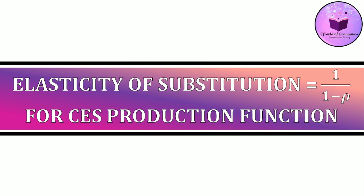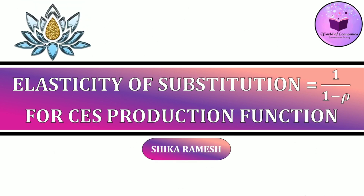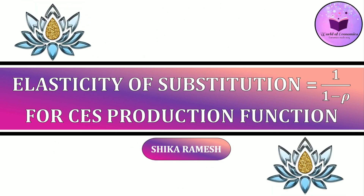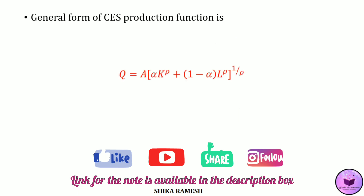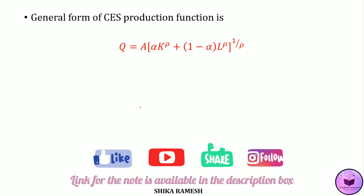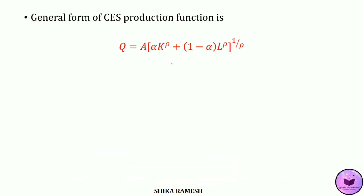Hello friends, in today's video we shall see the mathematical derivation of the elasticity of substitution for a CES production function, which is 1 by 1 minus rho. We have already seen the general form of a CES production function, which is q is equal to a times alpha k raised to rho plus 1 minus alpha l raised to rho, the whole raised to 1 by rho.